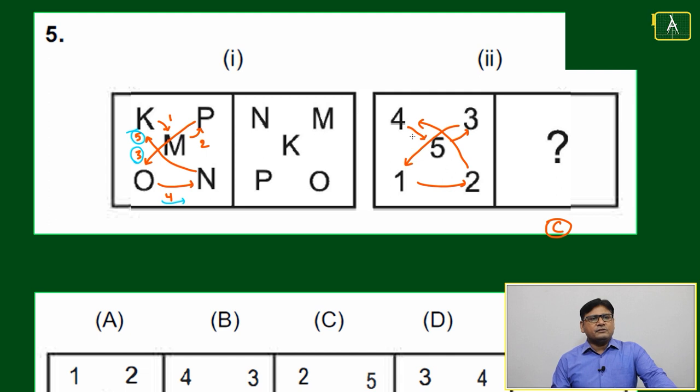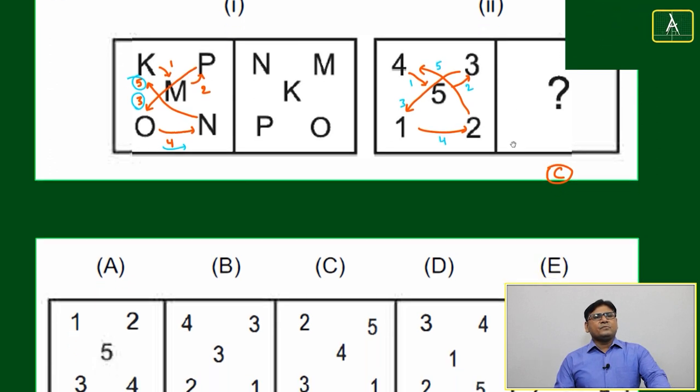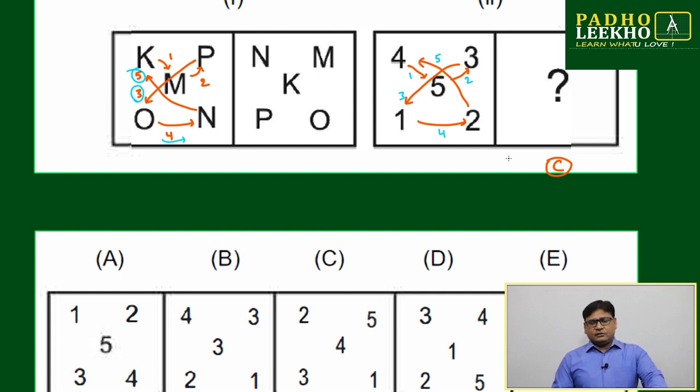Now, the same concept will apply here. This is one, this is two, this is three, this is four, and this is five. I am telling more about it in sequence of the shifting. Four will come here. Then one thing is 100% sure, we can say four will be at center.